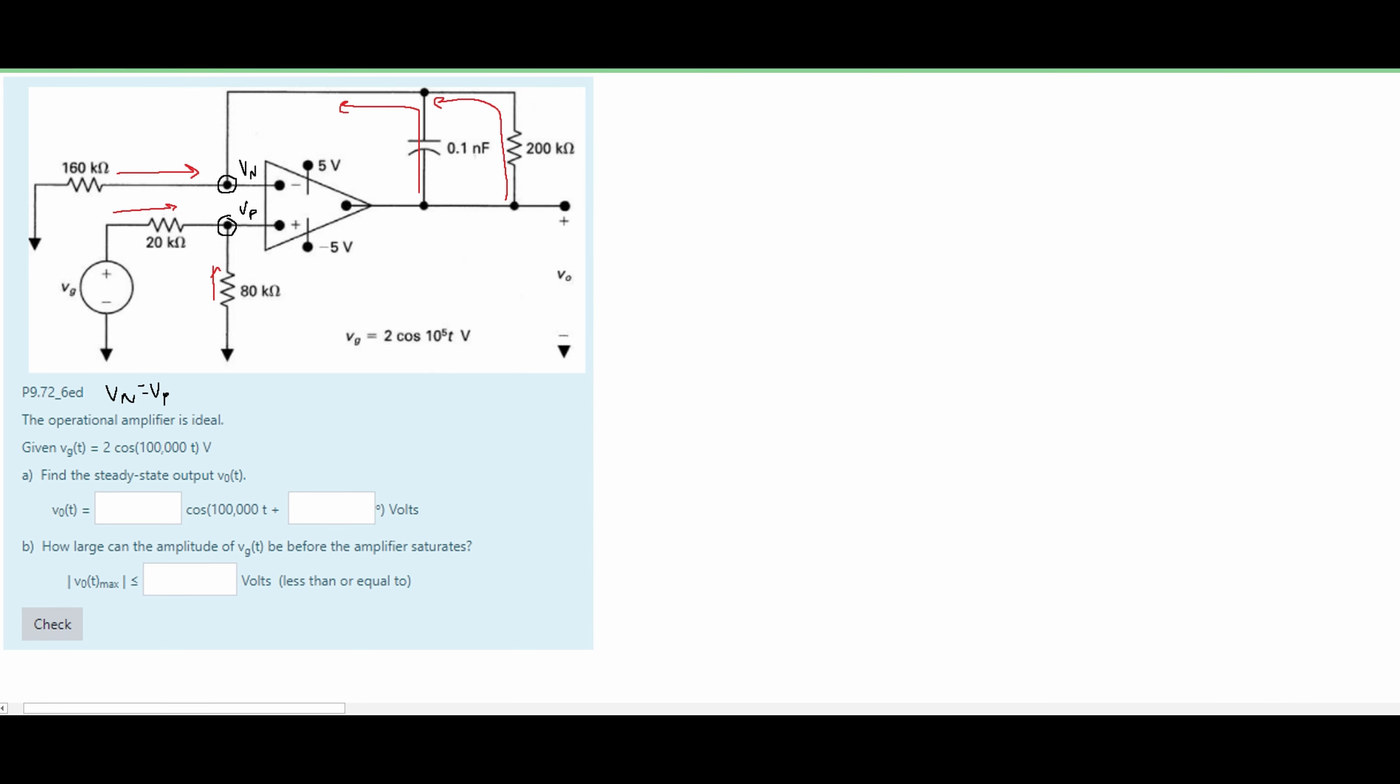Now we can write a formula or an equation that will express this. We are going to have our VN over our 160 kilo ohms plus the VN minus our V0, and this is happening over our capacitor. Well for this capacitor we have our XC equal to our negative J over our omega times C. So we will have a negative 1 divided by the parenthesis and then our omega. In this problem our omega is 100,000 and to this we are going to multiply it by 0.1 times 10 to the negative 9 because we want our nanos to just be in farads.